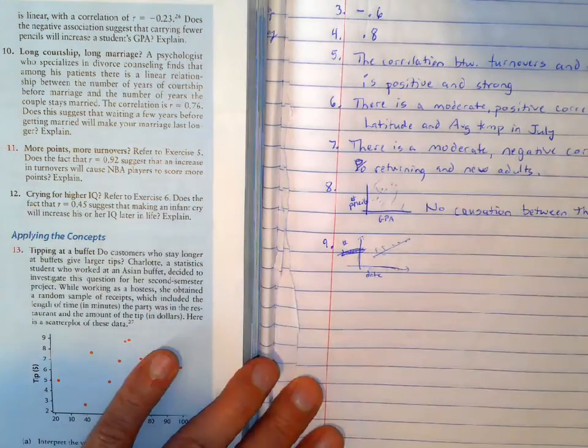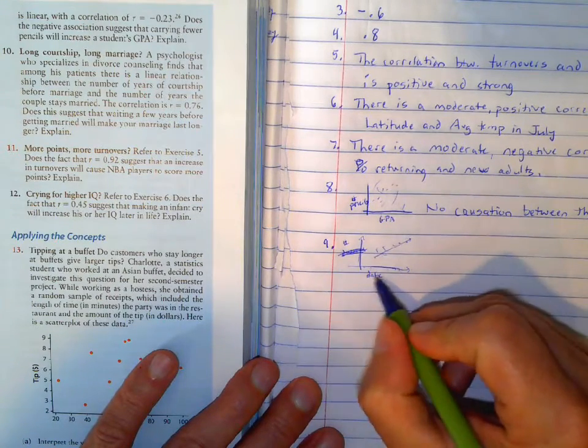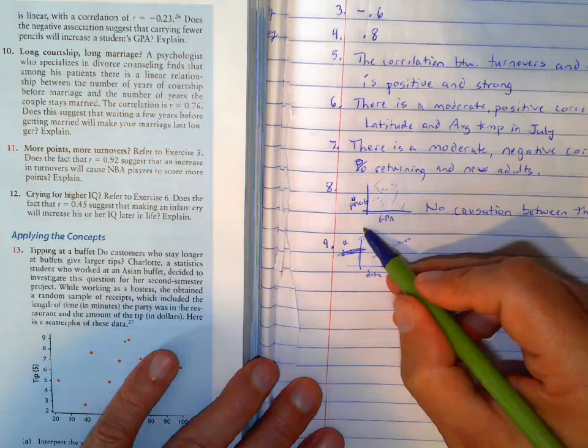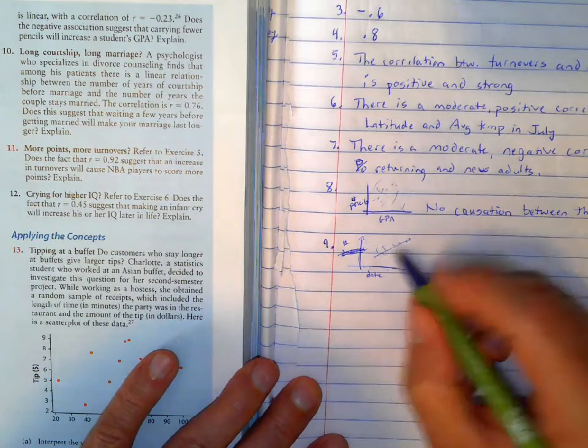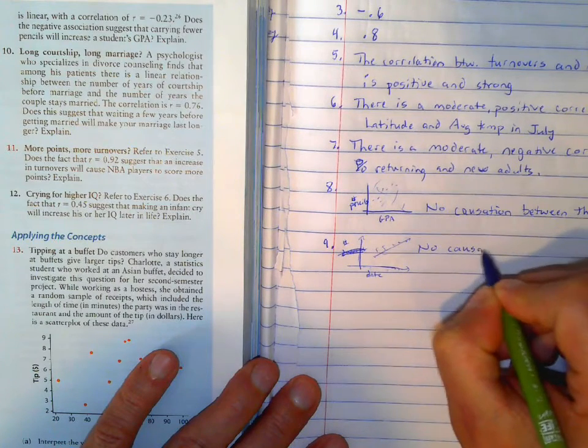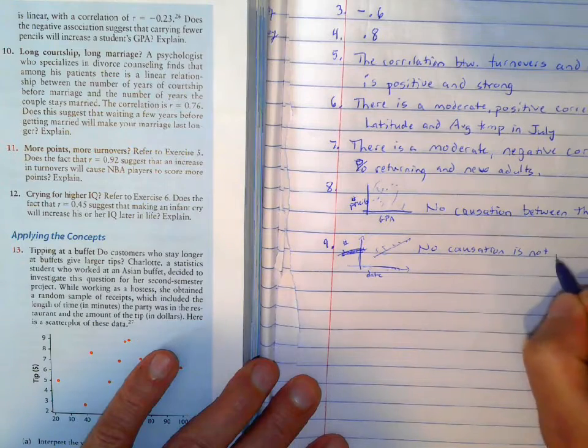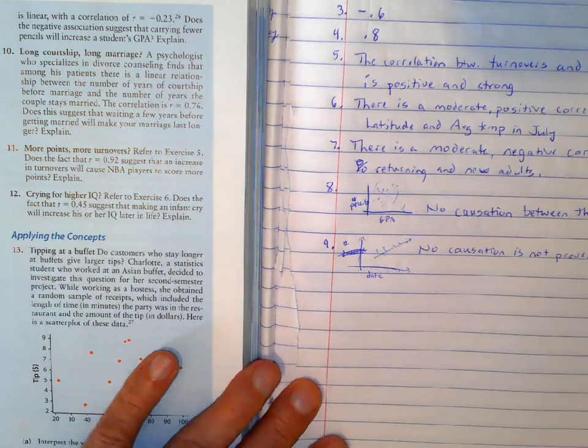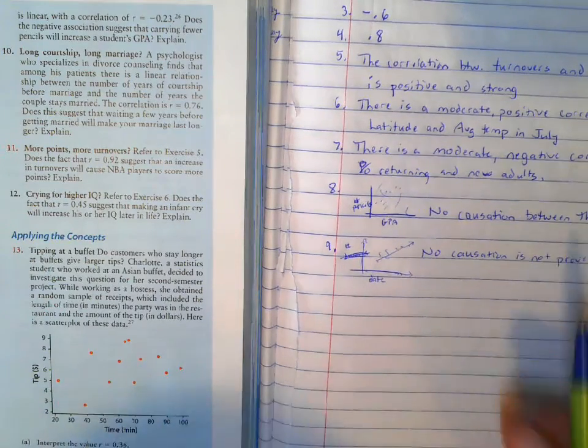It could. There's a relationship between that, right? If you date longer, you might get to know the person more and therefore maybe stay married longer. But I can't say that just because of that one reason. So we can say no, just be causation is not proven. Or there's no causation between the two variables. There's a lot of other factors that go into that as well.